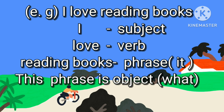I love reading books. 'Reading books' is a noun phrase. It is the object of the sentence. The whole phrase 'reading books' stands for the pronoun 'it.' This noun phrase gives an answer to the question 'what.' So, here the noun phrase acts as the object.